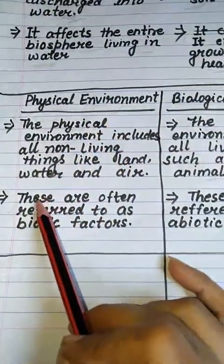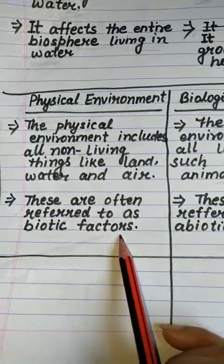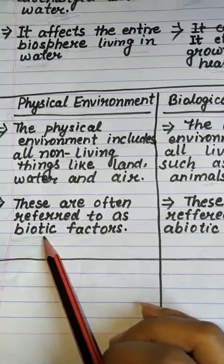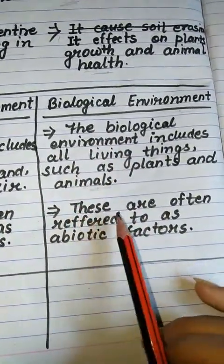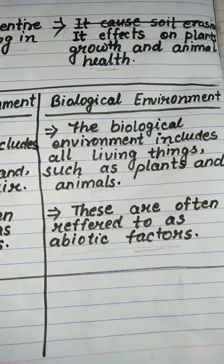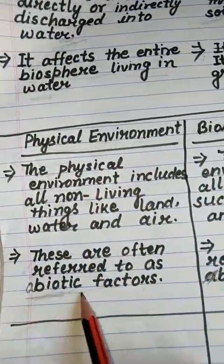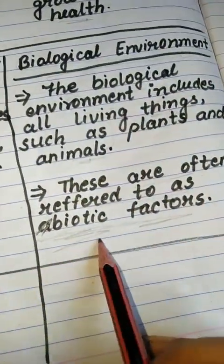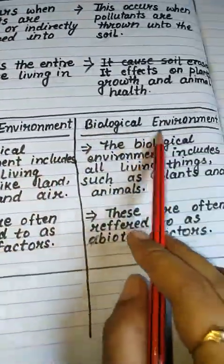Point number two: In the physical environment, these are often referred to as abiotic factors — abiotic means non-living. In the biological environment, these are often referred to as biotic factors. So physical environment is referred to as abiotic and biological environment is referred to as biotic. This is the difference between physical environment and biological environment.